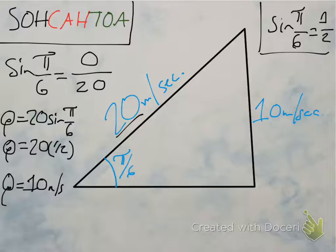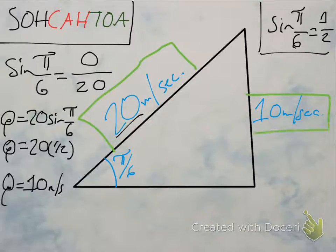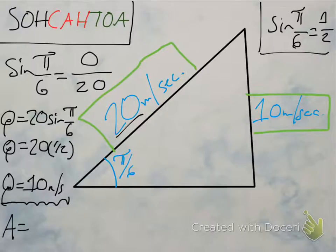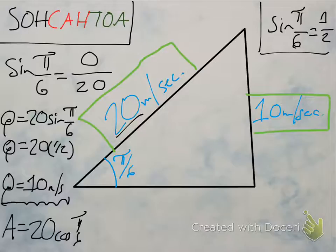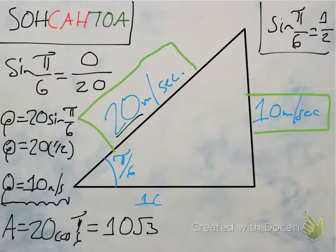Now we need our adjacent side, which we can arrive at pretty easily. We can arrive at our adjacent side simply by using the Pythagorean theorem: A equals 20 cosine of pi over 6. That is 10 times radical 3. So we know that this adjacent side is 10 radical 3 — that's our A. So we've figured out all sides of our triangle.